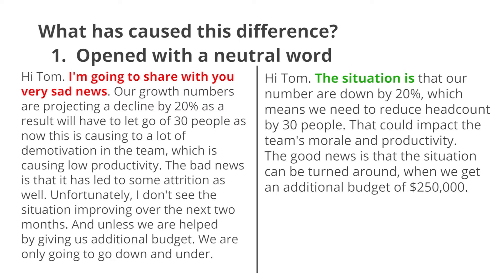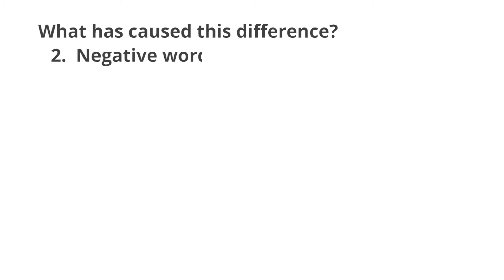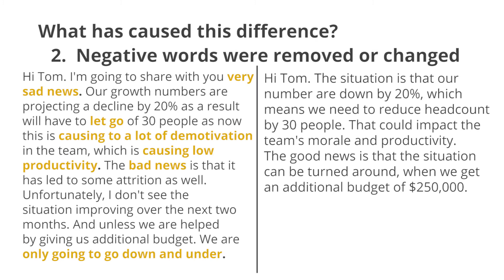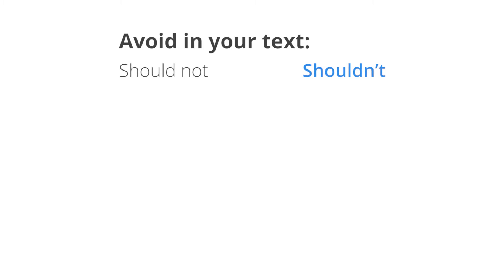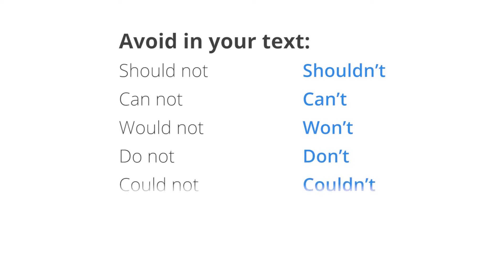When giving bad news, you want to start with a sentence like 'the situation is that we're currently behind by one month.' Number 2: negative words were removed or changed. The highlighted negative words from the first text were swapped with more positive ones. So instead of using 'sad news' and 'bad news,' the speaker offered a way to turn around the situation, which is good news. Also, contractions — split words such as 'should not' becoming 'shouldn't,' or words like can't, won't, and don't — make you sound negative and impact the text sentiment and emotion.